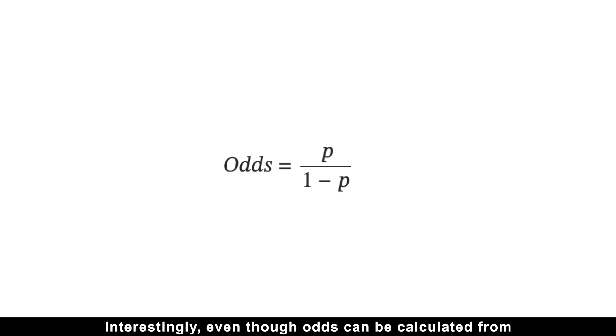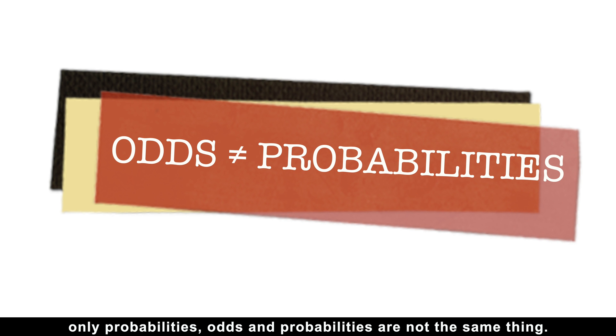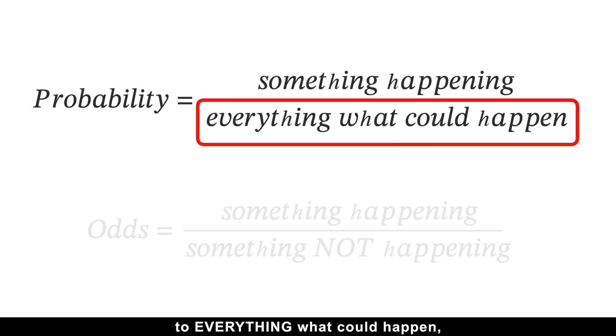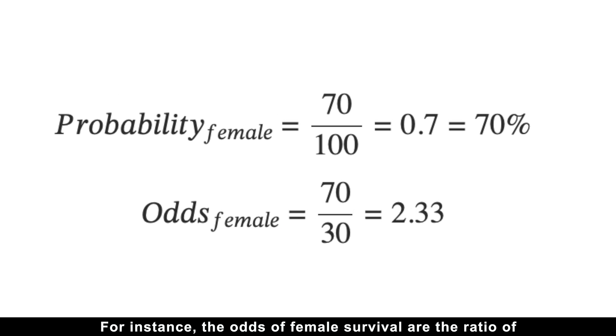Interestingly, even though odds can be calculated from only probabilities, odds and probabilities are not the same thing. And here is why: while the probabilities are ratios of something happening to everything that could happen, the odds are ratios of something happening to something not happening.